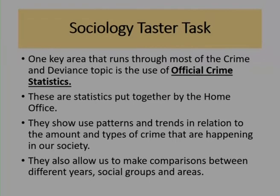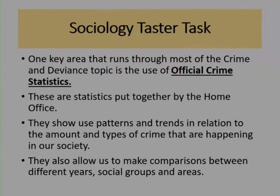Why are official crime statistics useful? They allow us to make comparisons between different years — for example, looking between 1980 and 2020 to see whether violent crime is increasing or decreasing. They also allow us to look at different social groups, such as the relationship between violent crime and ethnicity, class, gender or age. And they allow us to make comparisons between different areas throughout the country.